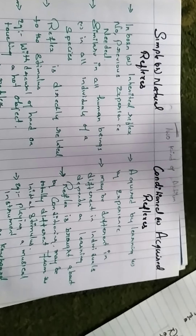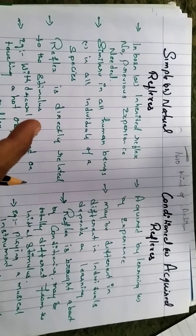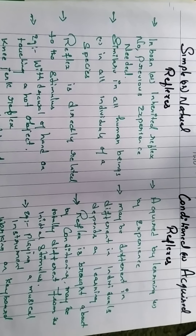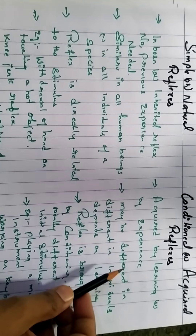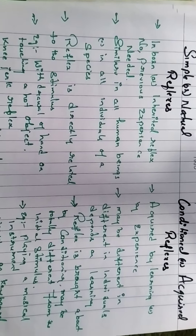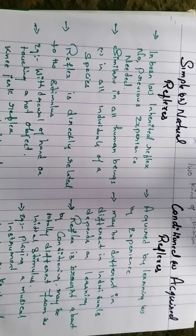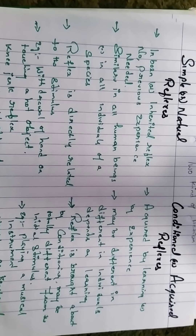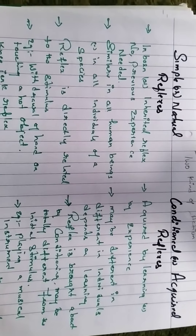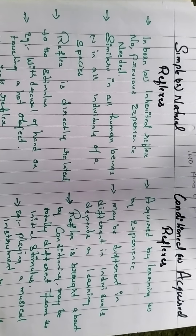So this is how reflex action takes place in two forms: simple or natural reflexes, and conditional or acquired reflexes — which you can also call voluntary actions. Some responses take place immediately without brain involvement, while others are acquired through learning and experience. This is the simple topic of reflex action. In the next class we are going to move to the somatic nervous system and then the autonomic nervous system. Thank you for your support, and I'm sorry for making you wait. See you in the next class!